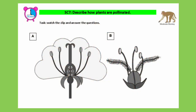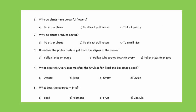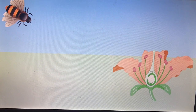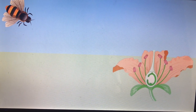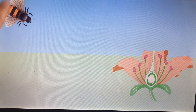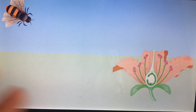We're moving on to SC7: describe how plants are pollinated. You have some multiple choice questions and a couple of thinking questions to answer. Please completely ignore question number four — just skip it. We're going to look at how pollination actually occurs. There is wind pollination, where pollen is just carried by the wind, but we're going to look at an example with a bee as an insect pollinator.